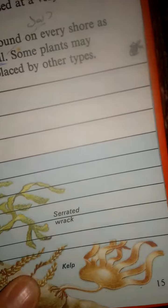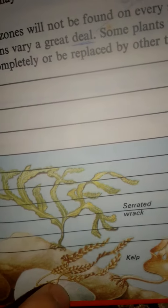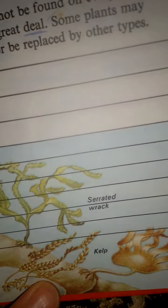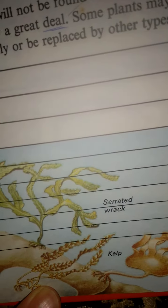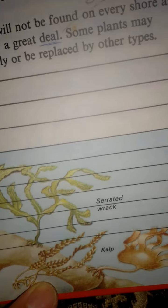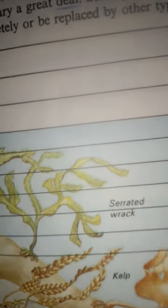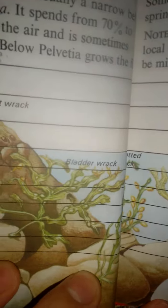Finally, below the low water mark come the biggest seaweeds, the kelp, which are not really shore plants but can grow down to a depth of 30 meters. Some of them may be partly exposed at a very low spring tide.